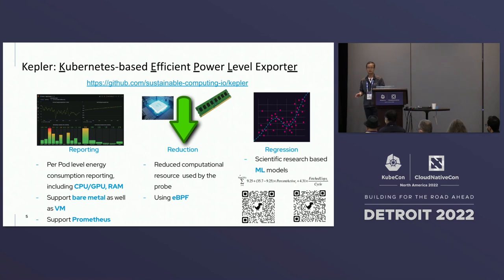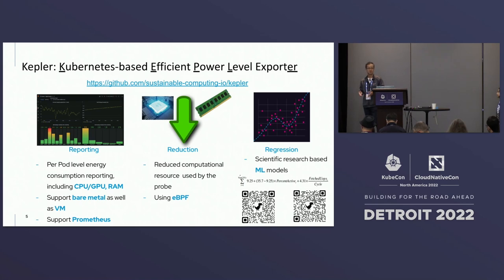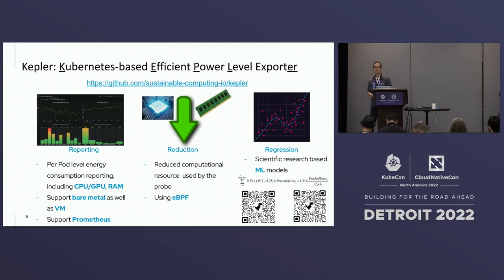Kepler has three goals in mind. One is reporting: we want to have the capability to tell customers, end users, and developers how much energy is used by the pods at different levels of components — CPU, DRAM, GPU, and eventually FPGA and networking. We also want the capability of running Kepler across hybrid cloud environments — on bare metal machines, private clouds, data centers, and hyperscalers like EC2, Azure, and GCP.